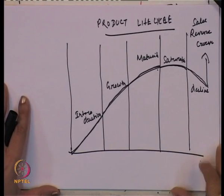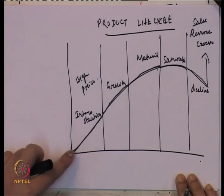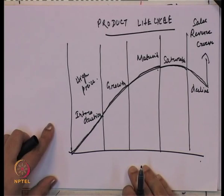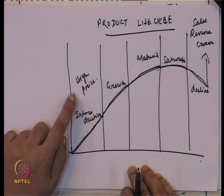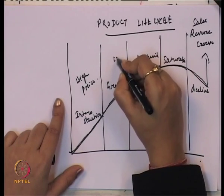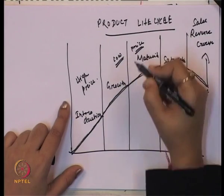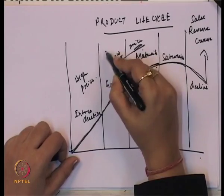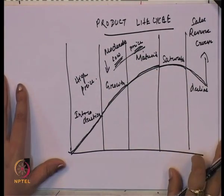Generally a high price is charged in the introduction stage. Why? Because the product is new, people are ready to pay for it, and the priority is reaching the consumer and increasing sales revenue with a high price. In the case of growth and maturity, they generally charge a lower or moderate price because the product has already reached a stage where people know about it. This moderate pricing continues through saturation and decline as well.